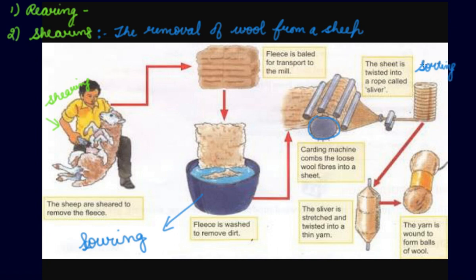Under sorting, what happens? Sorting consists of separating hair of different textures. Whenever you shave the sheep, you do not get hair of the same texture and same length. In sorting, hairs of different textures are separated.